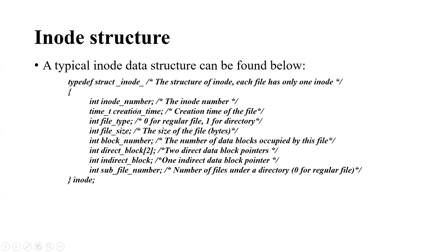The file type: for our SFS we use zero to represent a regular file and one to represent a directory. Then the file size, which means the size of the file in bytes — how many bytes we have for this file. And then the block number, which also describes the file size but with granularity of the block size, meaning how many data blocks are occupied by this file.